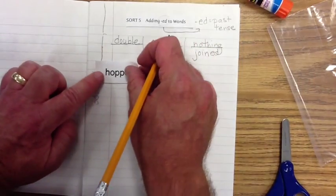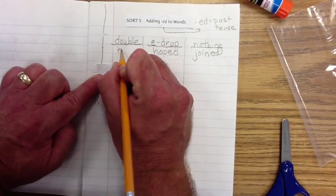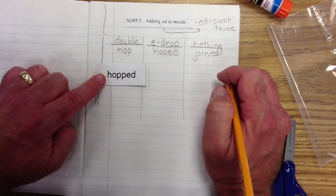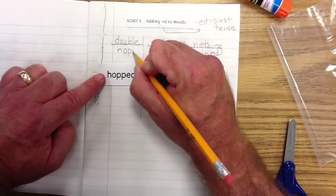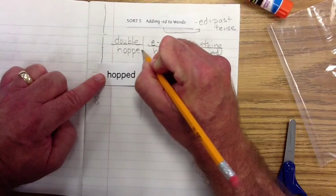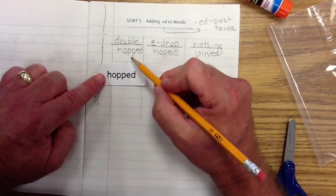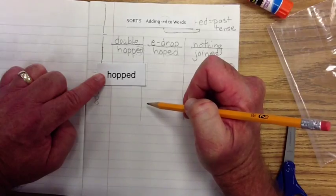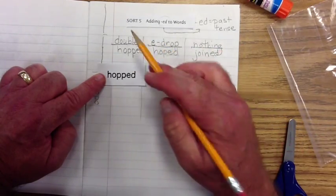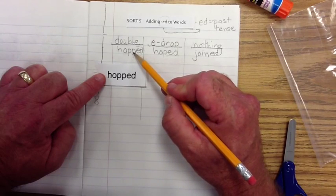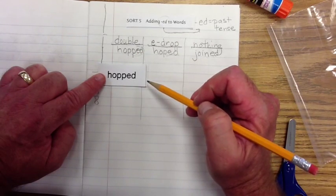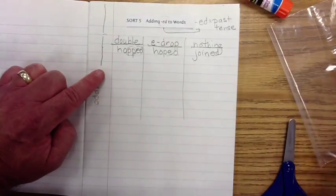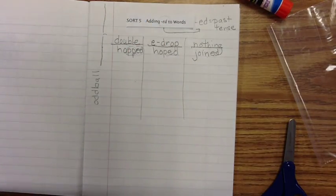Our last word is HOPPED. What is the base word? We see two P's, so in this case we had to add an extra P and then the ED — that's where the double comes in. How did that extra P get there? We had to add it and then add the ED as well. The double consonant is a consonant — those are consonants. Let's do a couple more so you can get the feel of it.